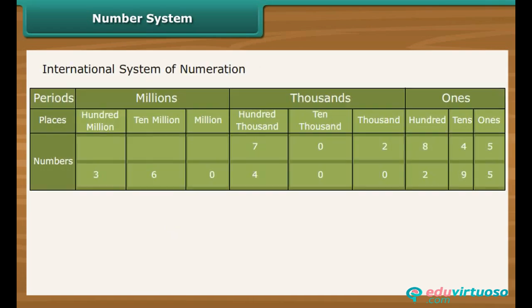In the international system of numeration, as it is being used, we have ones, tens, hundreds, thousands, and then millions. One million is a thousand thousands.